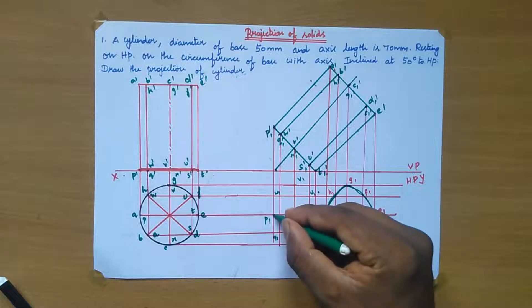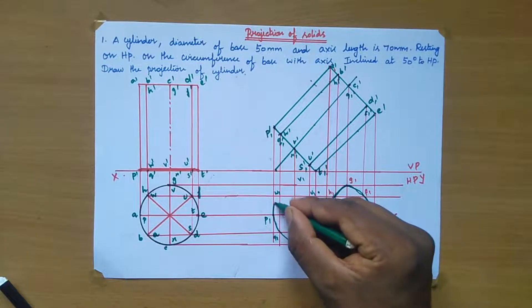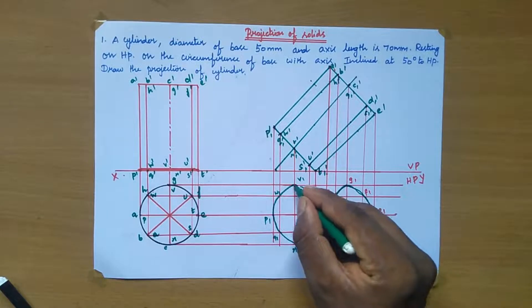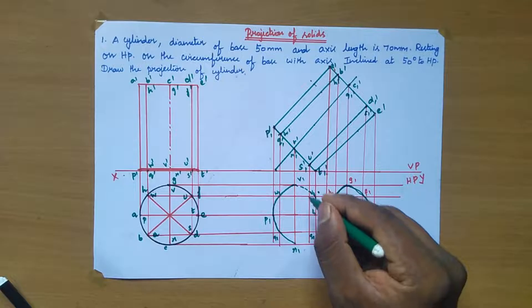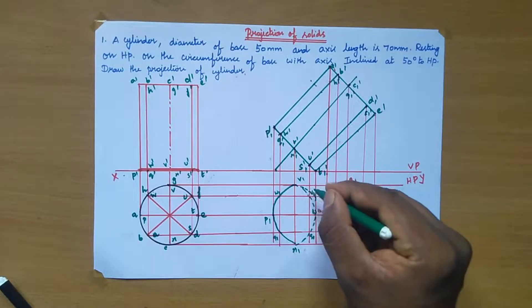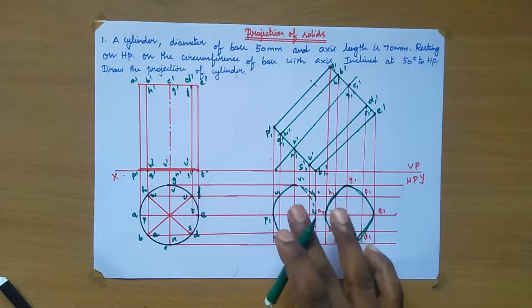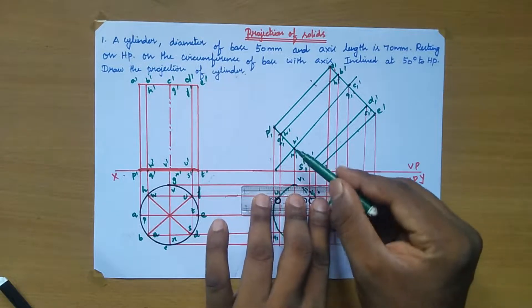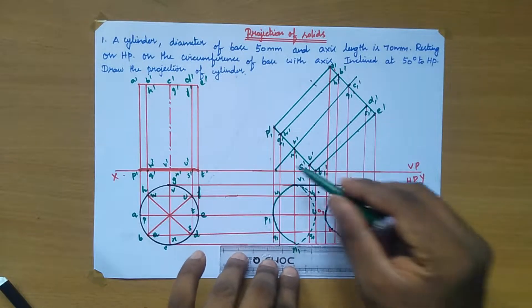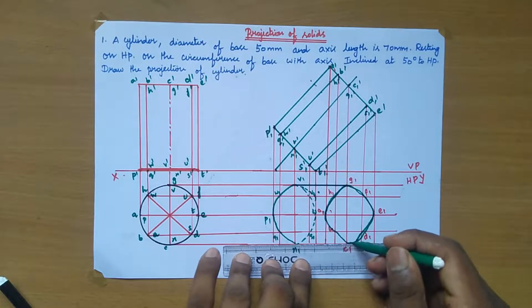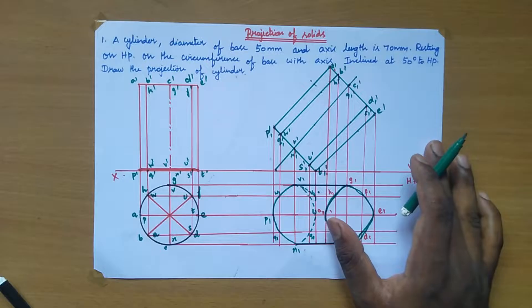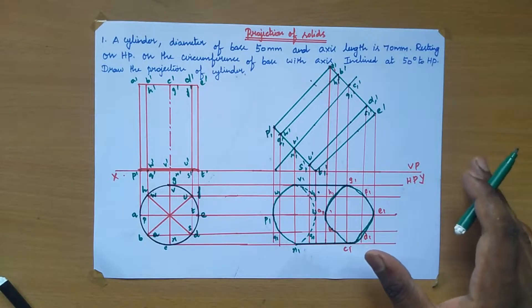Join this point and again join this point with dotted lines for the hidden surface area. We need to draw the boundary line: V1 point and G1 point — draw the boundary line. Again, join the boundary point to R1 point and C1 point. This is the projection of solids for the cylinder. Please like, share, and subscribe to the channel — thank you.